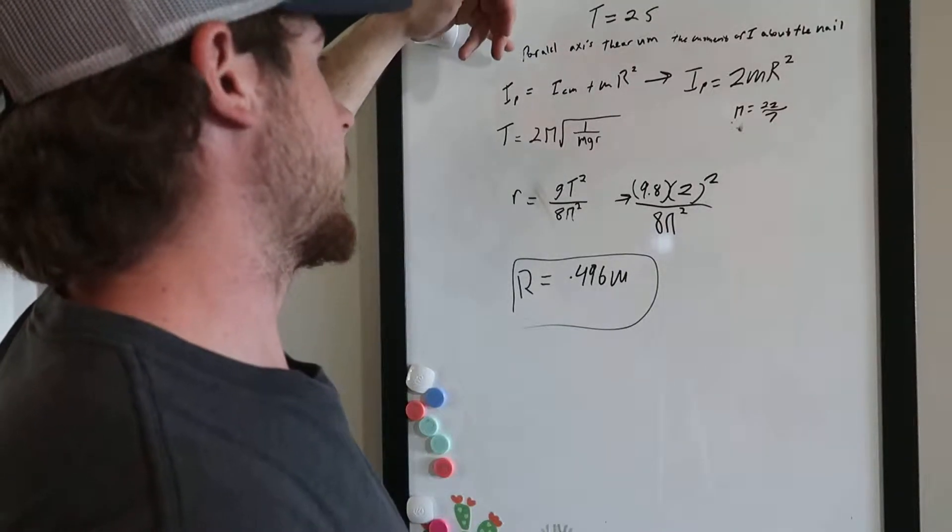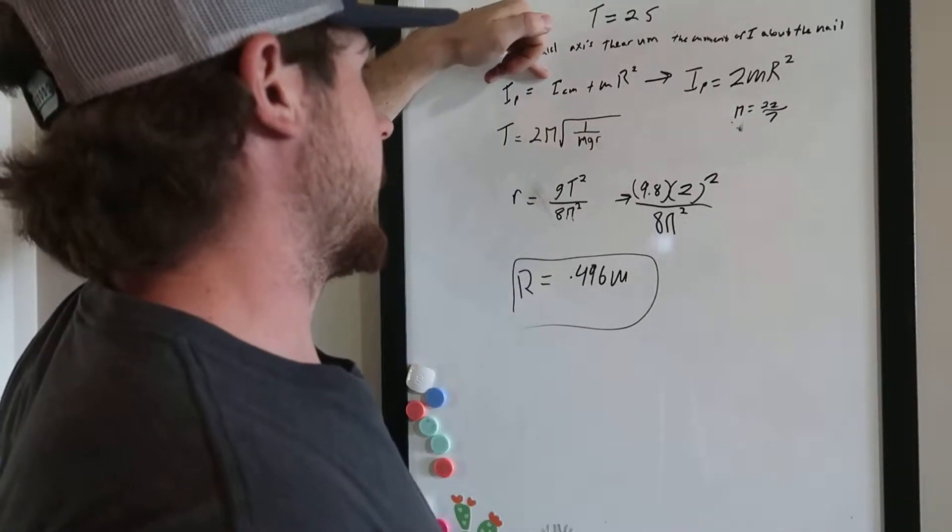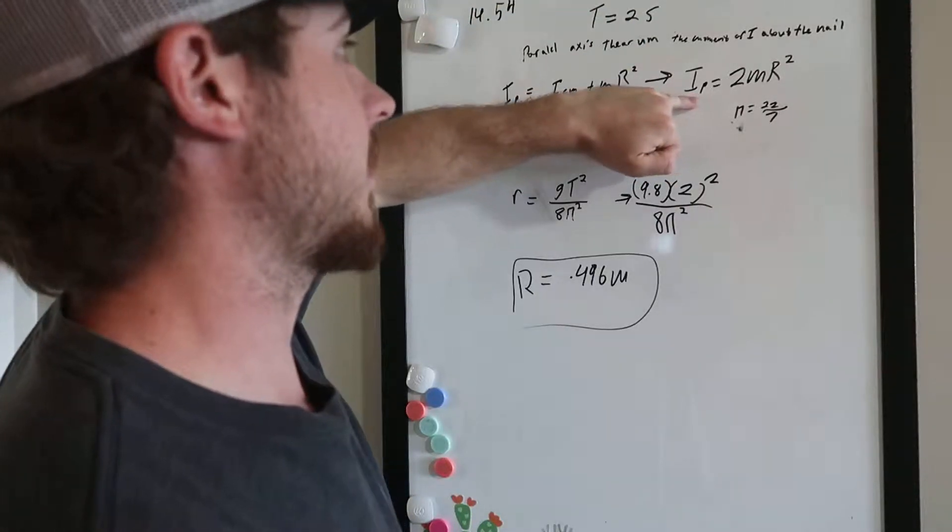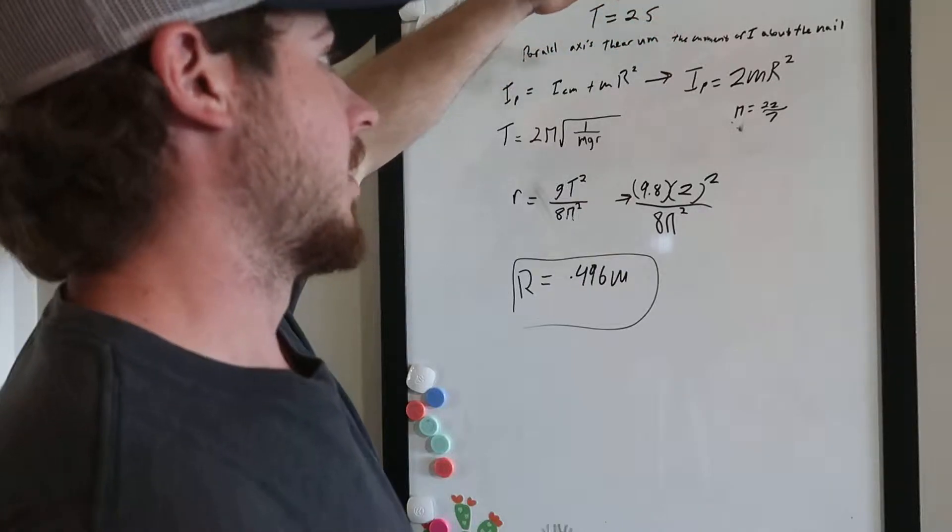the moment of inertia about the nail is going to be equal to the inertia to the center plus the mass times the radius squared. And so that's going to look like this: two times the mass times r squared.